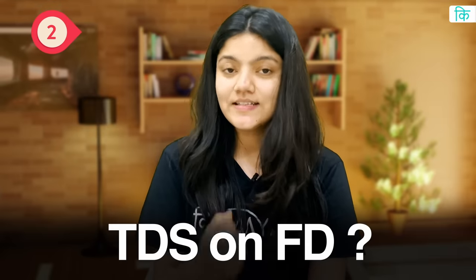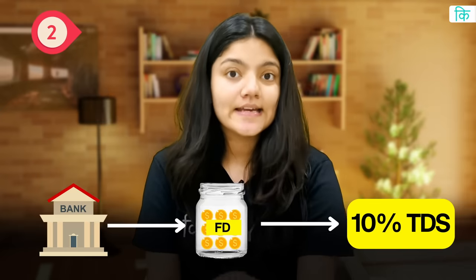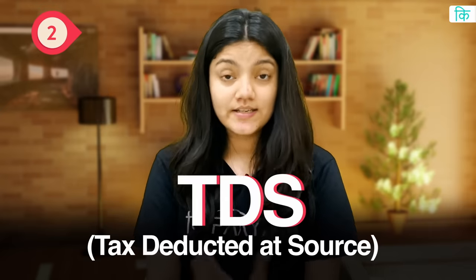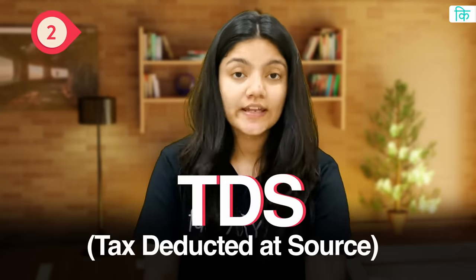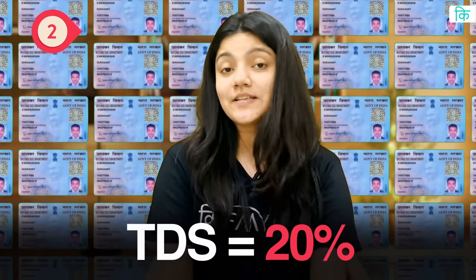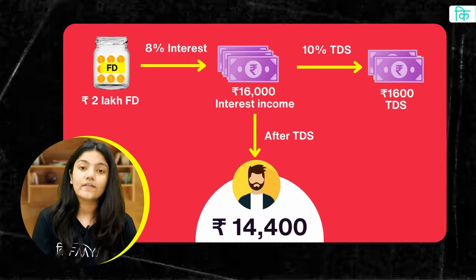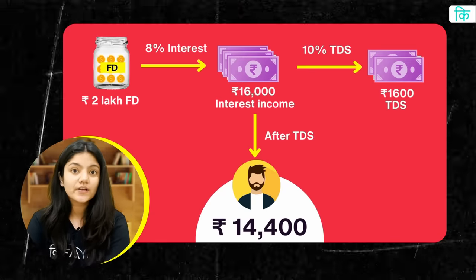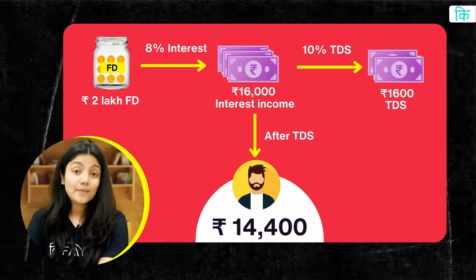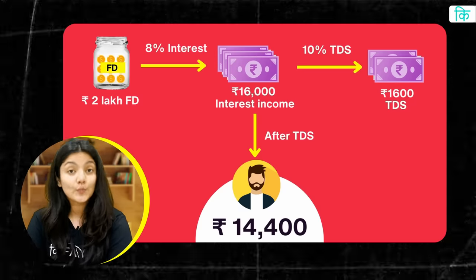Chalo, yeh toh notice ki kahani — ab TDS ki kya kahani hai. TDS ki kahani bohot hi simple si hai. Aap kisi bhi bank se FD karvao ge, to aapka TDS katega 10% ka. TDS ka matlab hai tax deducted at source — yani ki jo aapki income jahan se aaye, wahin pe aapka tax cut jaayega. Agar aapke bank ke paas aapki PAN card ki information nahi hai, to aapka 20% TDS bhi cut sakta hai. So agar aapne kisi bank se 2 lakh ki FD karvai aur aapka 8% interest hai, to aapki interest income hogi 16,000 rupaye — ispe aapka 10% TDS katega, yani 1,600 rupaye, to aapke paas jo interest income ayegi woh ayegi 14,400 rupaye.